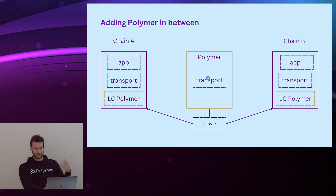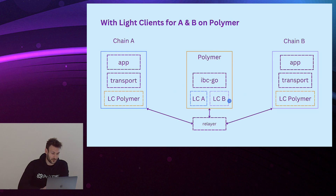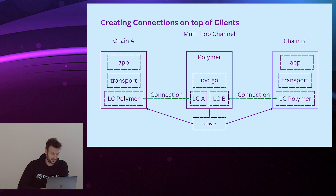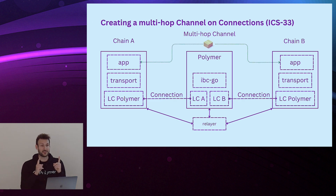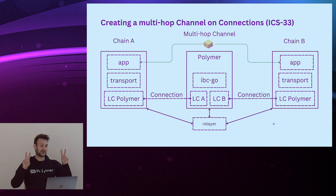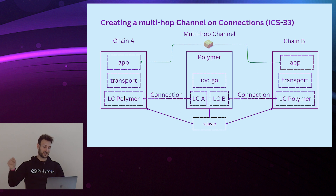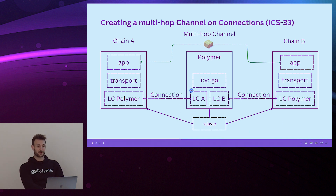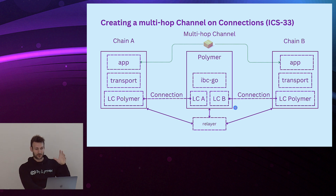If we want to create connections, we have connections on top of the light clients. But differently, we're not going to create separate channels between chain A and Polymer and between Polymer and chain B. We're going to use multi-hop IBC and create a multi-hop channel. What is actually happening under the hood is that we're not going to write state intermediately on Polymer, but we're going to use connection proofs under the hood to enable this multi-hop channel.